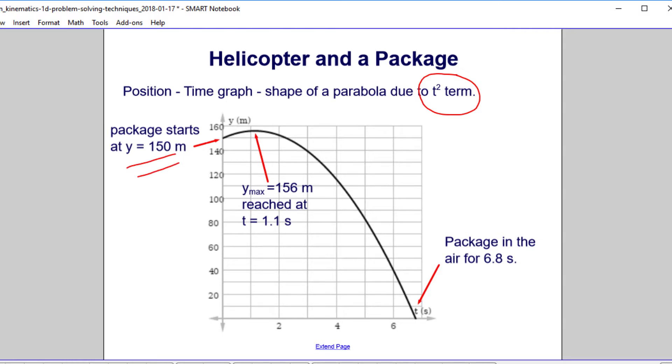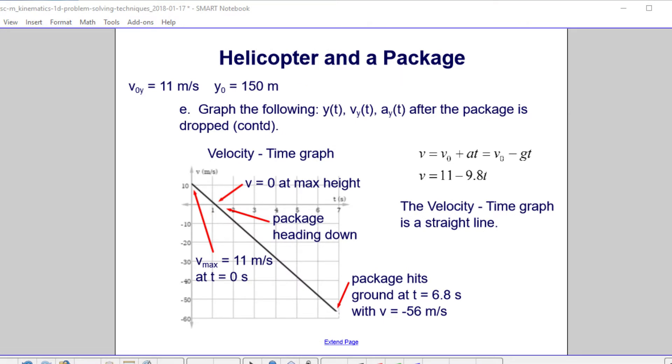We know that the package starts at 150, that gives us this point. We know it reaches a maximum height of 156 meters at 1.1 second, because we've calculated that, so that gives us another point. And then we know it hits the ground, which is height zero, right down here, at 6.8 seconds. So knowing that it's a parabola and this is the peak, we would just kind of sketch a curve through there, and that would be just fine.